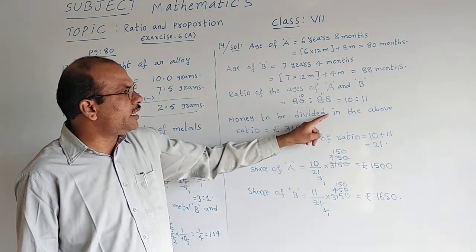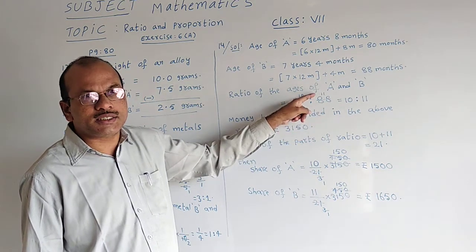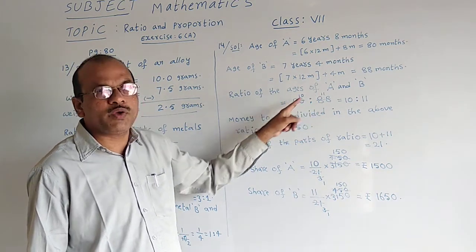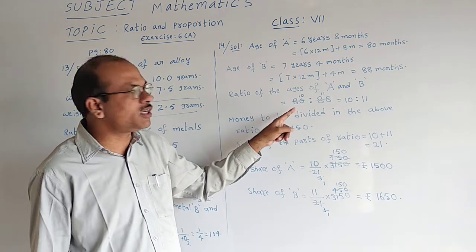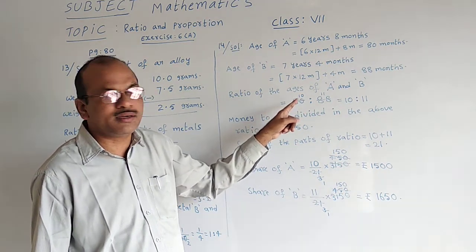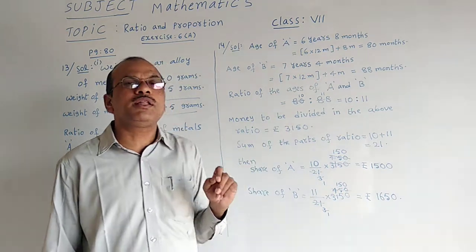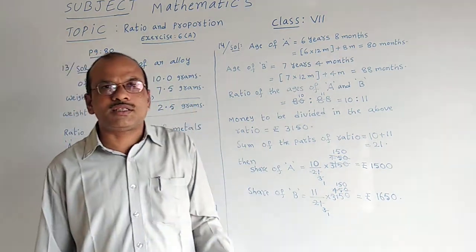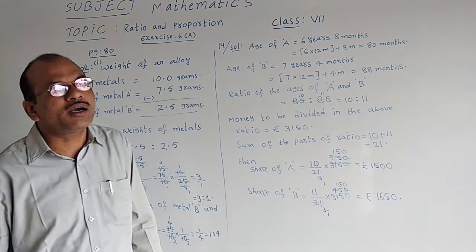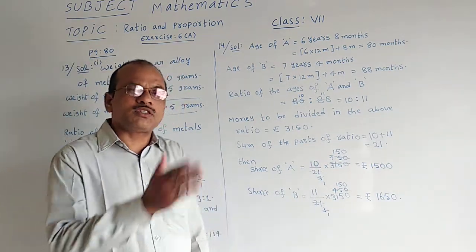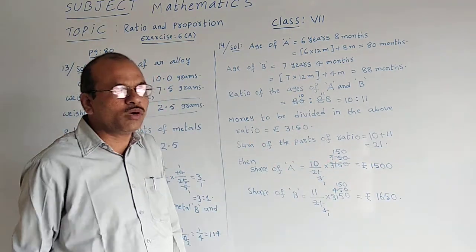8 table: 8 tens are 80, 8 elevens are 88. 10 and 11 we have got. No more common table is there for them to cancel again. So 10 is to 11 will be the ratio of the ages of those two people A and B. Order is also needed: First A then B.